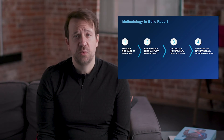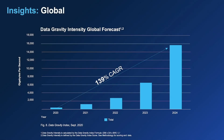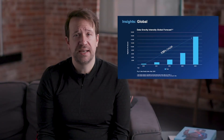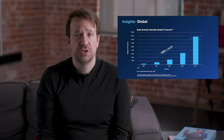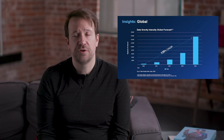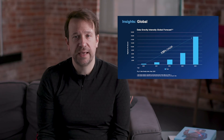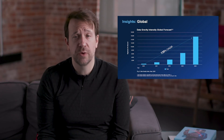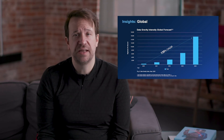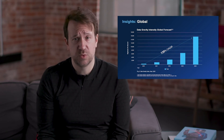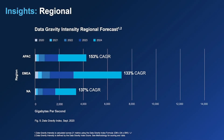With that, we created a series of insights and put them into the Data Gravity Index. These are taken from Data Gravity Index 1.0. The global data gravity intensity forecast is 139% CAGR from 2020 through 2024 — a tremendous amount of growth. That's because data is growing at an incredible pace, the number of applications consuming and creating more data are growing rapidly, and the amount of data we want to store is growing as well.